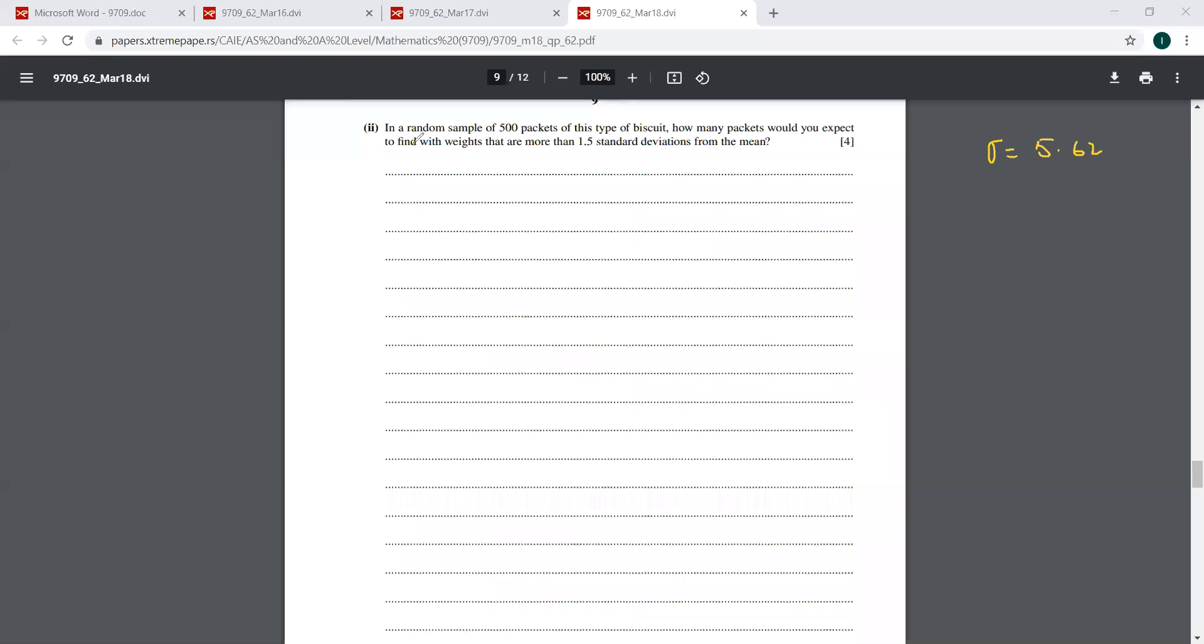Now we go to the second part. It says in a random sample of 500 packets of this type of biscuits, how many packets would you expect to find with weights that are more than 1.5 standard deviations from the mean? Now to be clear about this, we should have a diagram here. If you are familiar with the diagram, the things would be very clear to you.